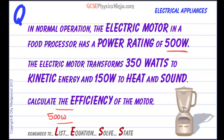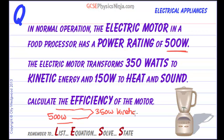The electric motor transforms 350 watts to kinetic energy, so our Sankey diagram can look a little bit like this. It's a bit of a strange Sankey diagram, but there we are — 350 watts of kinetic energy, and 150 watts make up the other part, which is heat and sound.